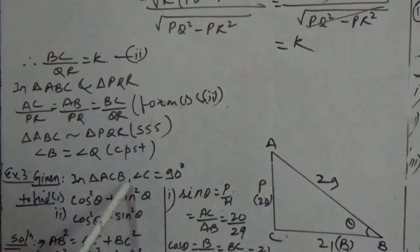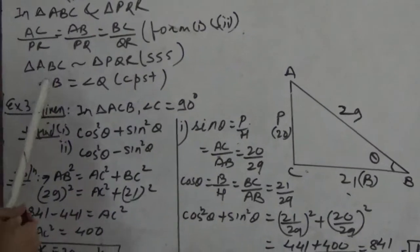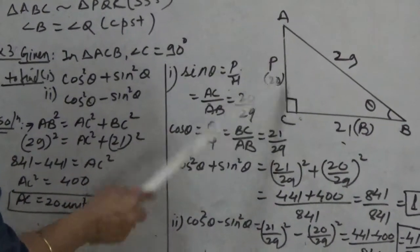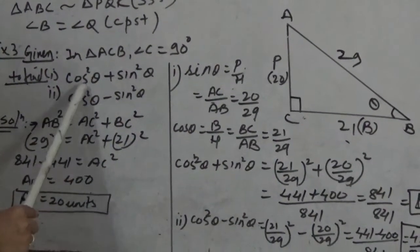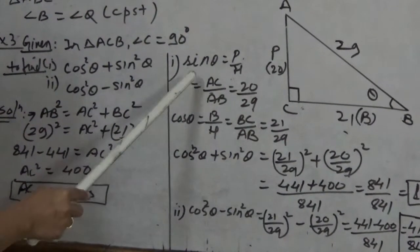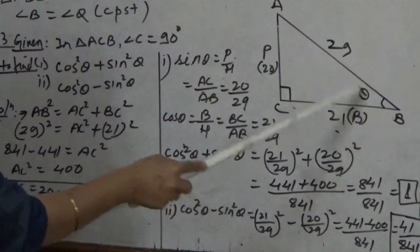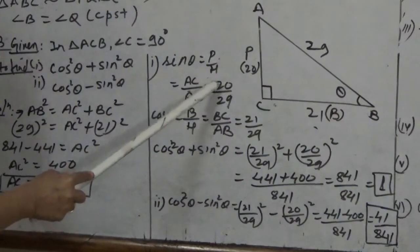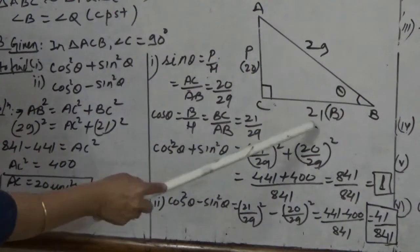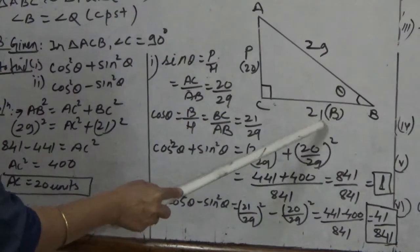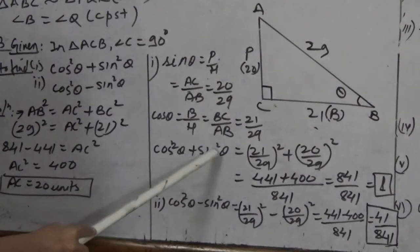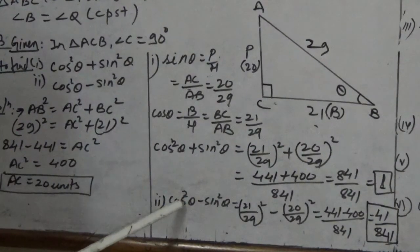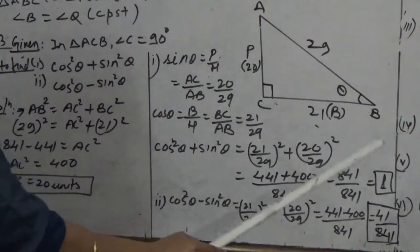In example 3, triangle ACB is a right angle triangle at C, with AB = 29 and BC = 21. We use Pythagoras to find AC = 20. Sin theta = perpendicular upon hypotenuse = AC upon AB = 20 upon 29. Cos theta = base upon hypotenuse = BC upon AB = 21 upon 29. Cos² theta + sin² theta = (21/29)² + (20/29)² = 1. Cos² theta − sin² theta = 41 upon 841.